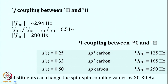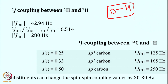For one-bond coupling, consider the coupling between proton and deuterium in an HD molecule. The one-bond D-H coupling is approximately 42.94 Hz, roughly 43 Hz. The gyromagnetic ratio of proton is 6.5 times higher than that of deuterium, so the one-bond H-H coupling J1(HH) is 280 Hz.